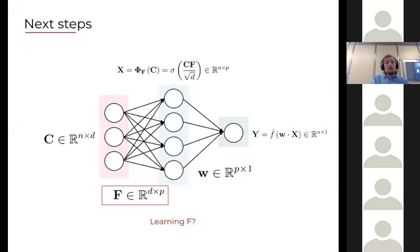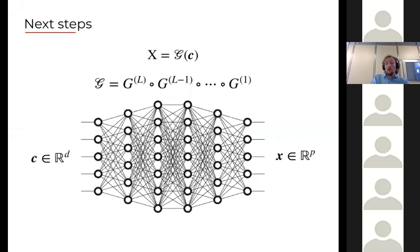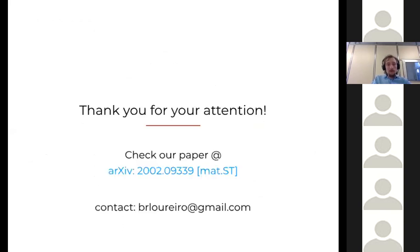Just to conclude with some perspectives: here we have just looked at very simple tasks. One question we could ask is, what is the effect of training F, learning the best representations in high dimensions? This is something that would be interesting to look at, to look at harder tasks. Another thing is, can we do the same thing for deeper generative models such as the ones that Sebastian was describing? This is something we are looking at at the moment and I find quite exciting. With that I thank you for your attention. If you are interested to know more about the technical details, please check our paper in the archive or write me a note.